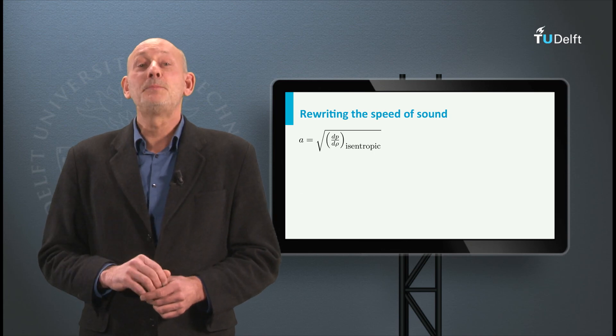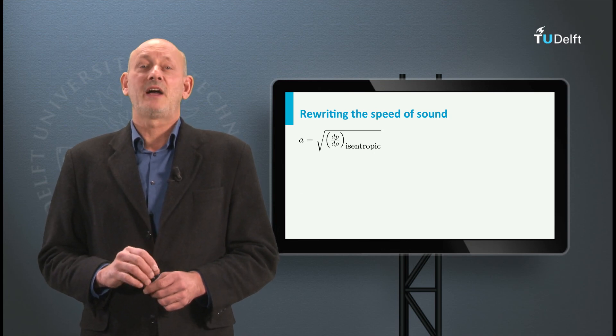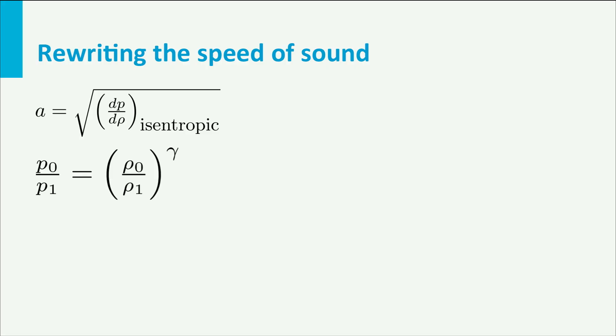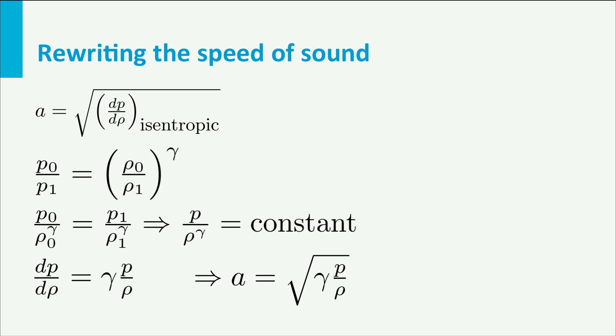The differentials dP d rho can be derived from the isentropic relation for pressure and density. This equation can also be written as p over rho to the power gamma is constant. Differentiating this we find dP over d rho is gamma times p over rho. When we substitute this in the expression for A we find A is the square root of gamma p over rho.